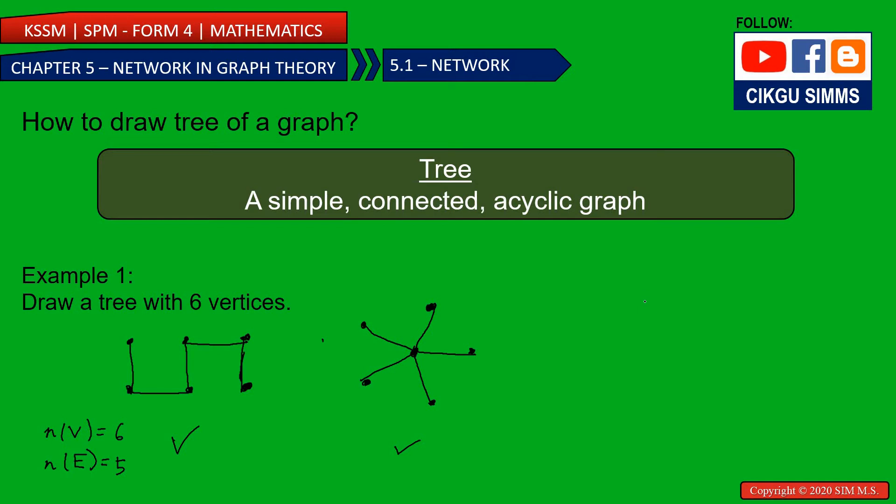And then all the organization chart also can. 1, 2, 3, 4, 5, 6. I have 6 vertices. Now I draw 5 edges: 1, 2, 3, 4, 5. Like an organization chart. This is also can be a tree. So you choose one of it.